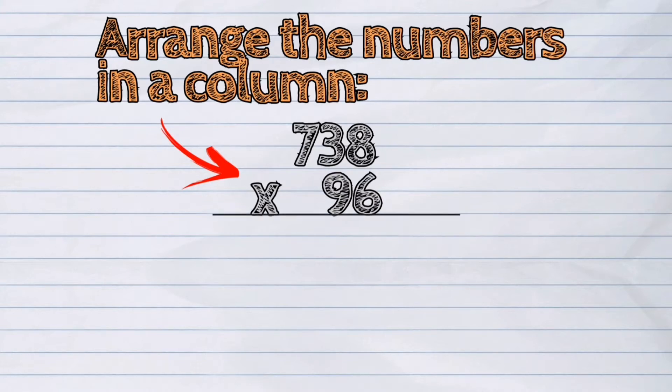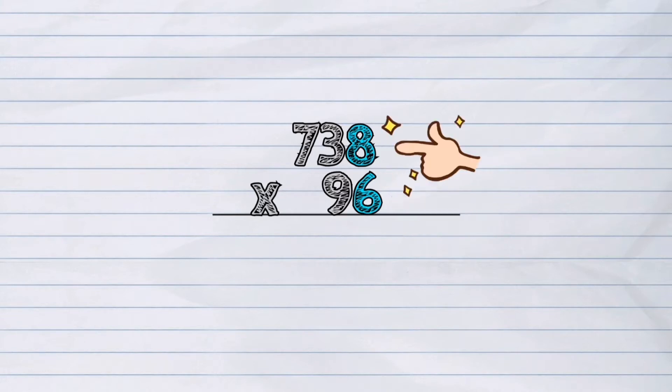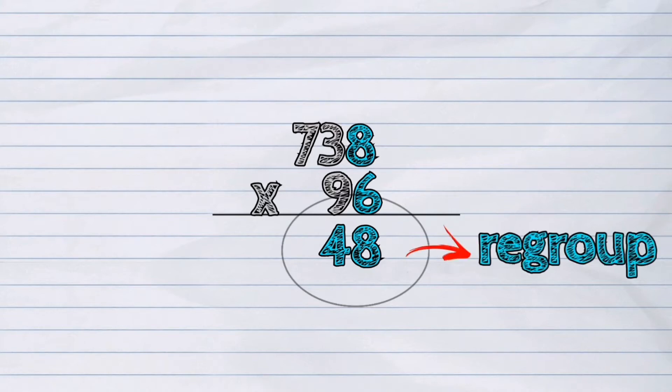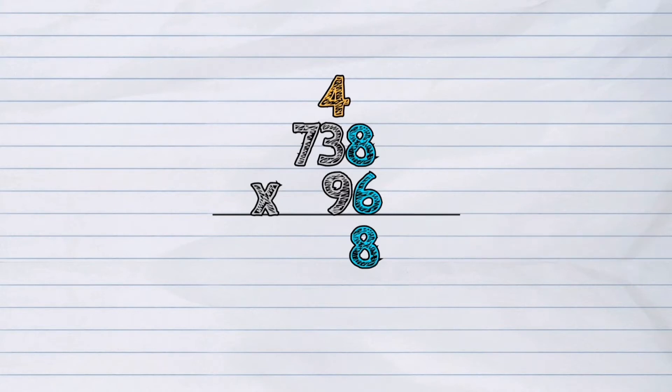Next, multiply the two numbers in the ones place. 6 times 8 is equal to 48. This number is larger than 9, so we need to regroup. 4 will be carried over in the tens place column, and 8 will be placed in the ones place column.